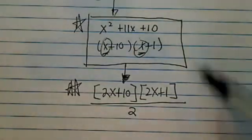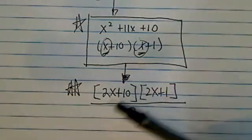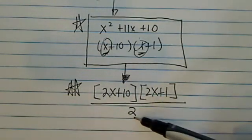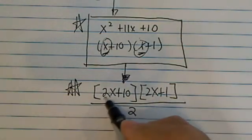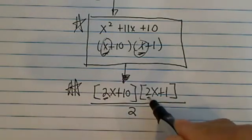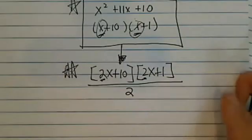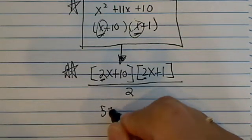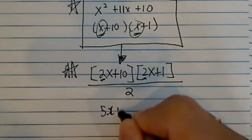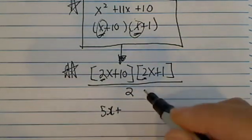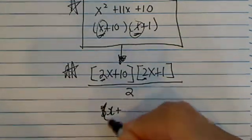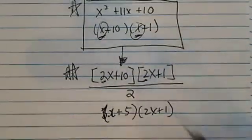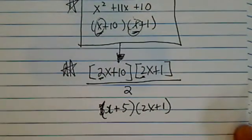So if this one had to be 3, it would be a 3x and I'm going to divide by 3. So whatever coefficient you have here, you need to take care of it. Now simplify: we have x plus 5 times 2x plus 1. Just like what we had before.